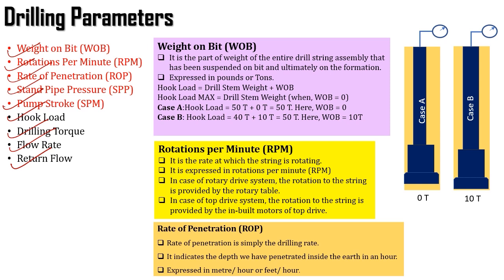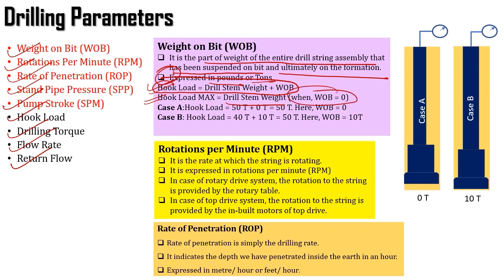Coming to Weight on Bit, it is the part of the weight of the entire drill string assembly that has been suspended on the bit and ultimately on the formation. It is generally expressed in terms of pounds or tons. Hook load equals drill string weight plus weight on bit. This is the formula to find out the hook load, which is the summation of drill string weight and weight on bit. If someone asks what would be the maximum hook load, it will be the drill string weight when weight on bit is equal to zero.